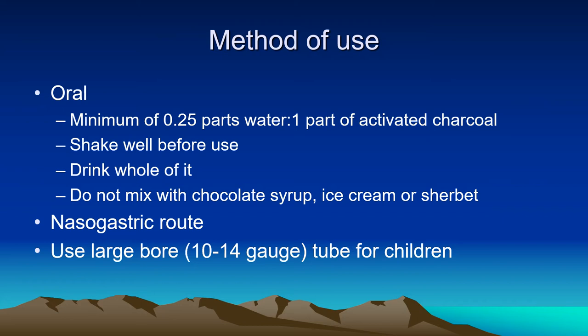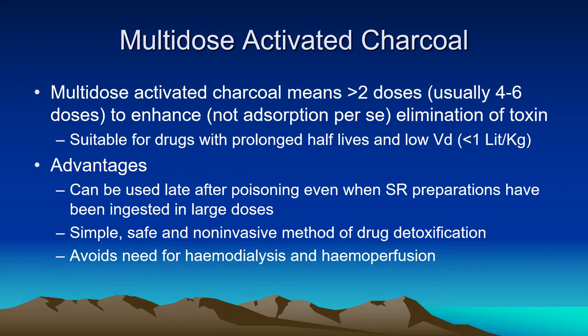Charcoal can be given either orally or through a nasogastric tube. For semi-conscious or unconscious patients, a minimum of 0.25 parts of water should be used for each part of activated charcoal to make a thick slurry. It should be shaken well before use and drunk promptly; the remaining portion can be diluted with additional water. One should not mix activated charcoal with chocolate syrup, ice cream, or sherbet. When given by nasogastric route, a large-bore nasogastric tube should be used — typically size 10 to 14 French for children.